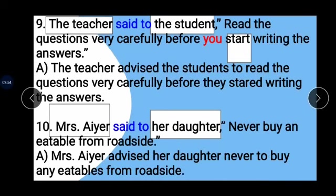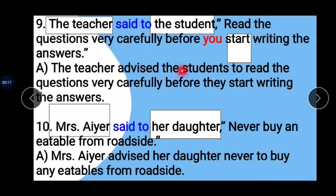Example 9: 'The teacher said to the student: Read the questions very carefully before you start writing the answers.' The teacher is our subject, the student is our object. 'Said to' changes to 'advised', and 'you' changes to 'they'. Answer: The teacher advised the student to read the questions very carefully before they start writing the answers.